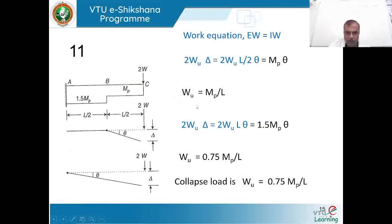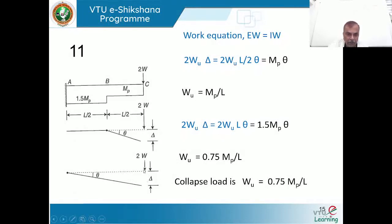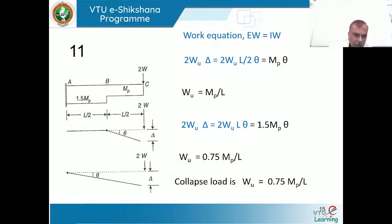Mechanism 2: plastic hinge at the fixed support. The entire beam of length L rotates by θ, with the free end displaced by δ = Lθ. The load 2W is pushed by δ. Work equation: 2W×δ = M_P×θ at the fixity. With δ = Lθ, this gives 2W×Lθ = M_P×θ, so W = M_P/(2L). The collapse load is governed by the mechanism giving the lower value.